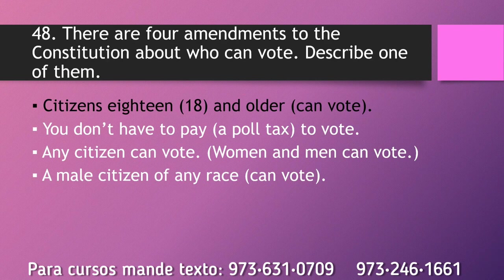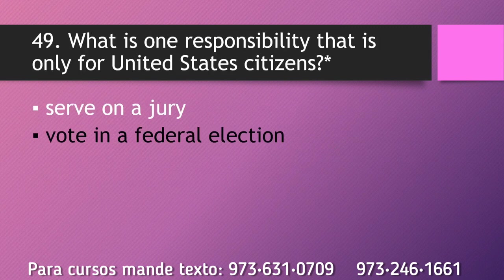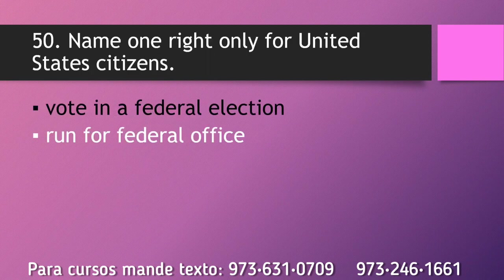There are four amendments to the Constitution about who can vote. Describe one of them. Citizens 18 and older can vote. Name one right only for United States citizens. Vote in a federal election.